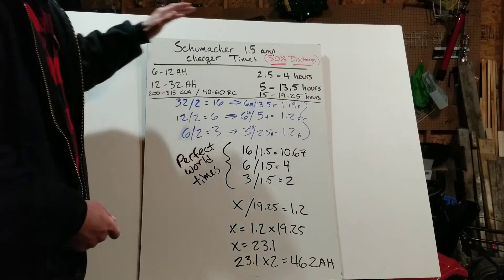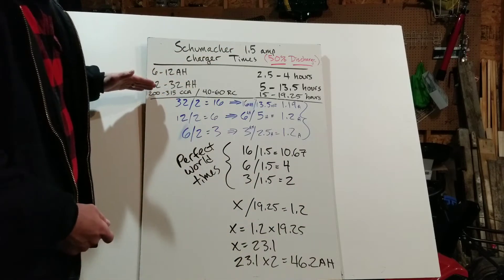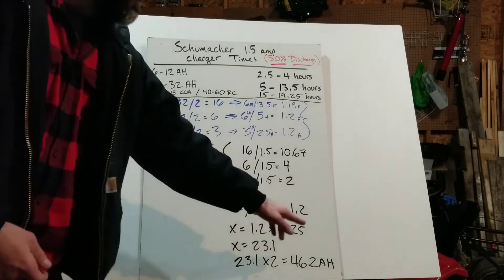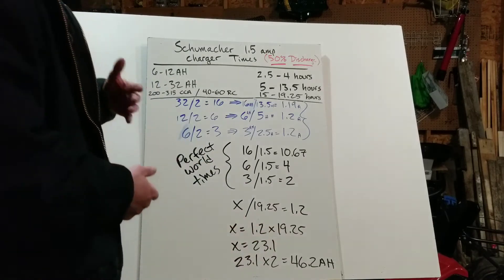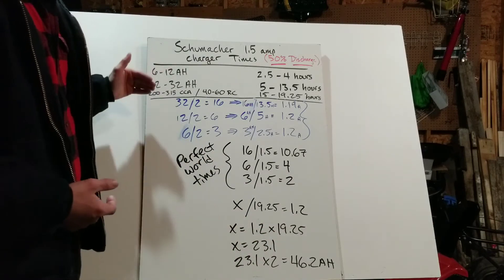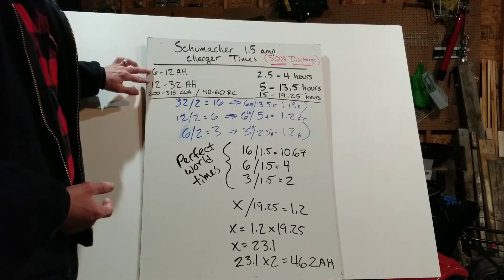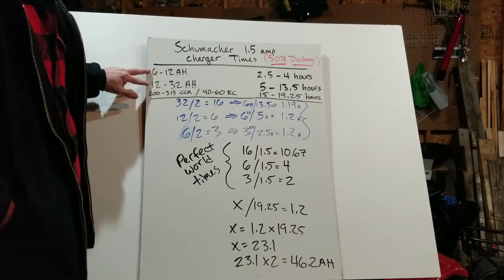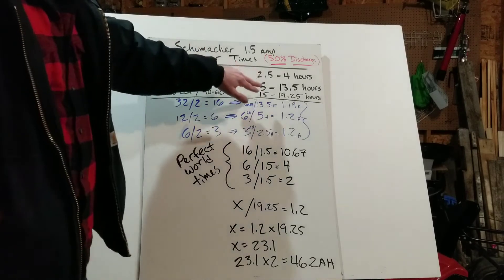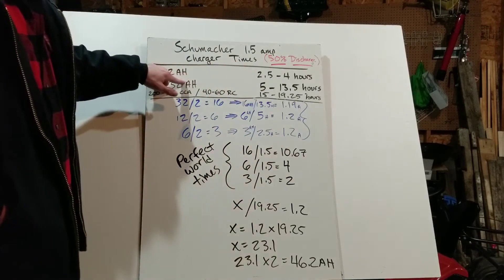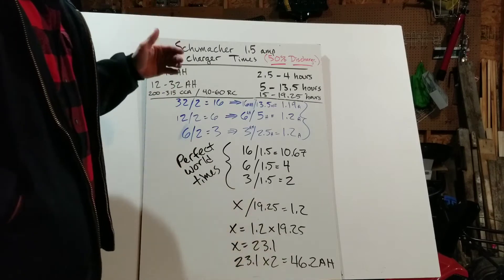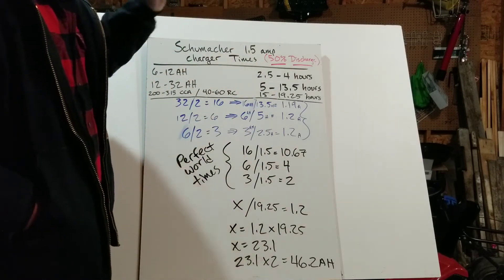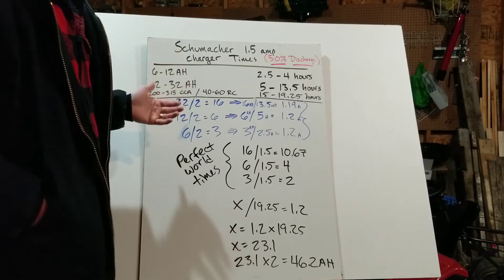We're just going to use the first three lines of that to make the example to show you how I arrived at my conclusion. So my issue when I first got into this is that it'll tell me for these smaller batteries that are good for lawnmowers or whatnot, it'll give me the charging times for the amp hour reading. But I wanted to know, what if I had a four amp charger or a 10 amp charger? How long would it take to charge a car battery?